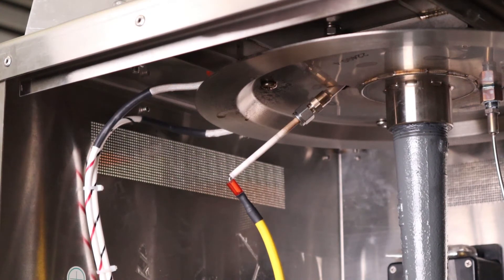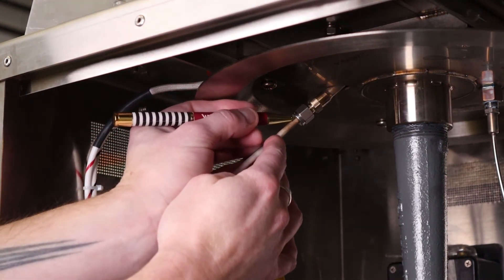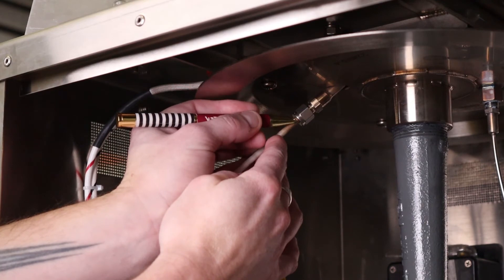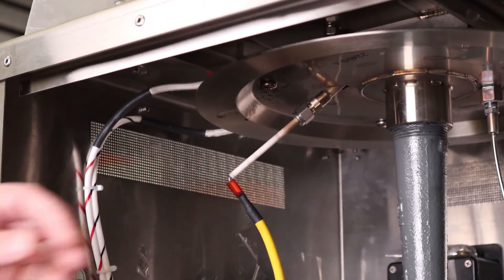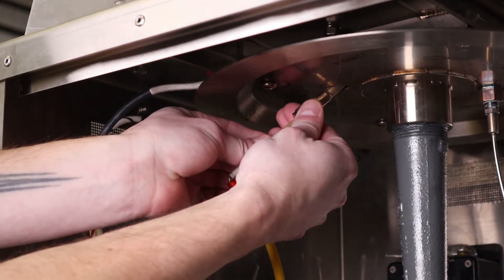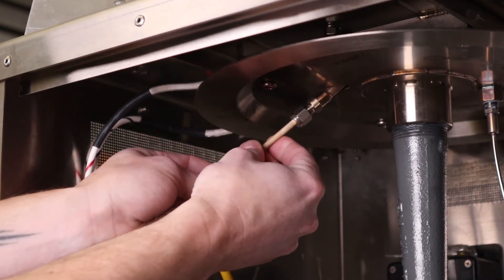Next we're going to inspect the electrode. Mark the electrode near the fitting tip so that you know where it needs to go when you put it back in. Loosen the fitting and remove the electrode.